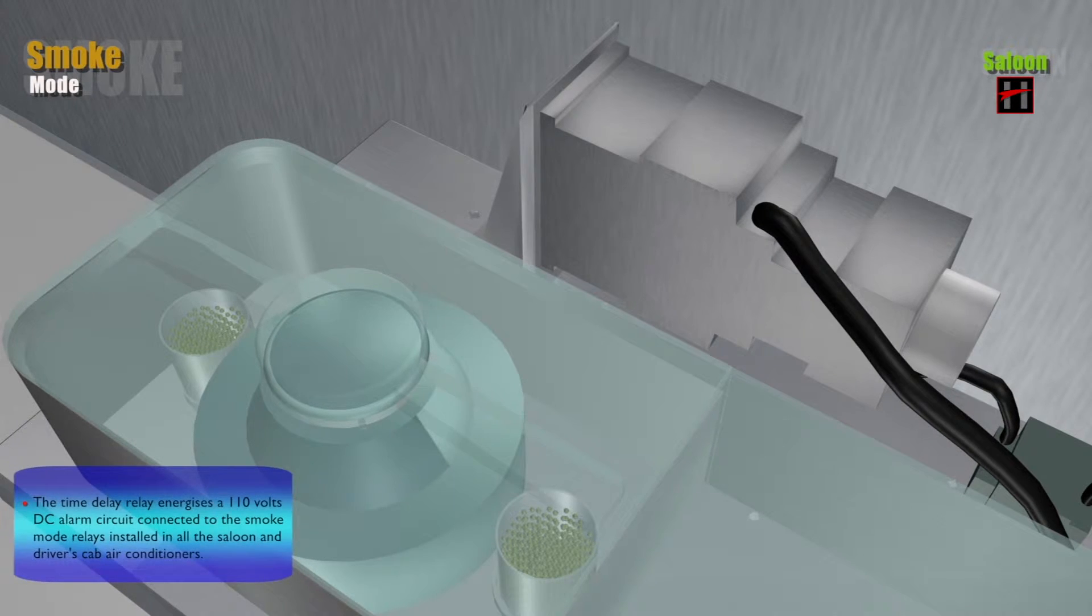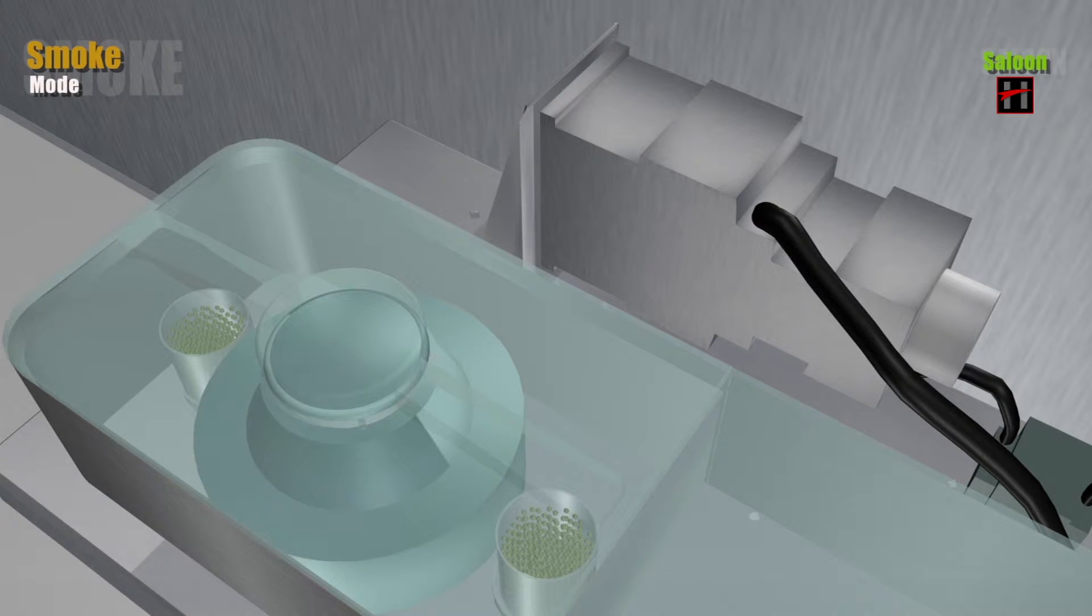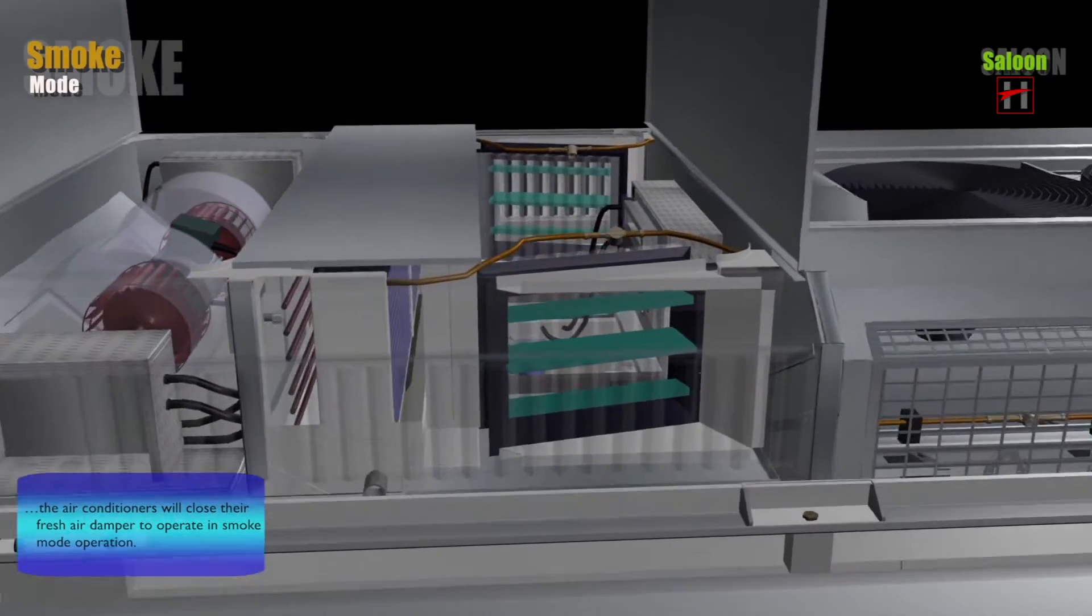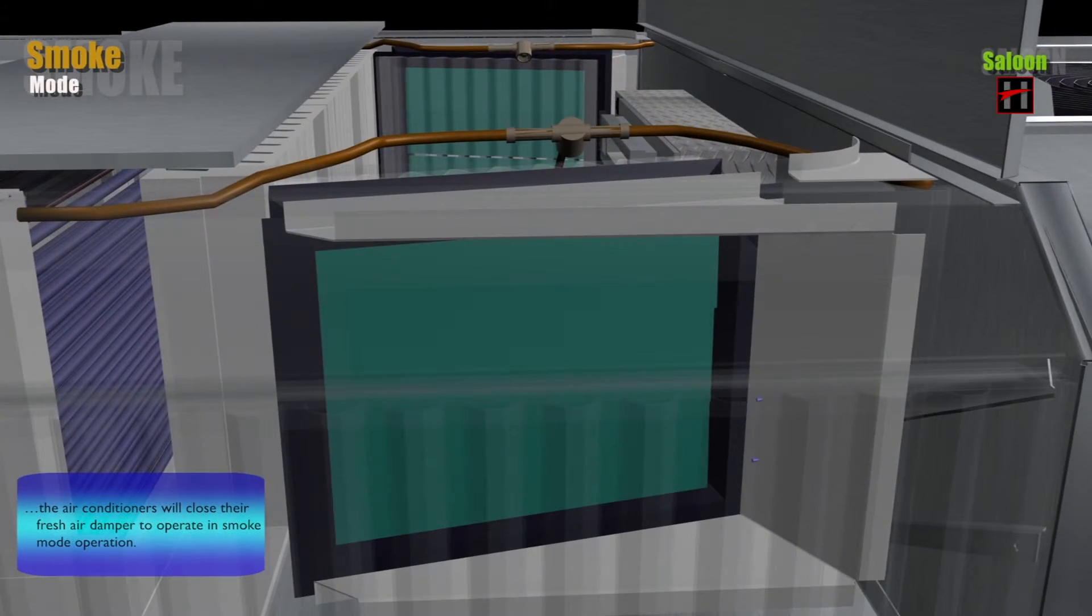The time delay relay energizes a 110 volt DC alarm circuit connected to the smoke mode relays installed in all the saloon and driver's cab air conditioners. As soon as these smoke mode relays are activated, the air conditioners will close their fresh air dampers to operate in the smoke mode operation.